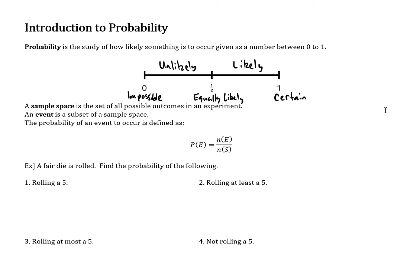So that's some of the words that match up with the numbers of probability. To use probability, we need to create a sample space. A sample space is the set of all possible outcomes of an experiment — it's kind of like the universe from Venn diagrams and sets. An event is a subset of a sample space.